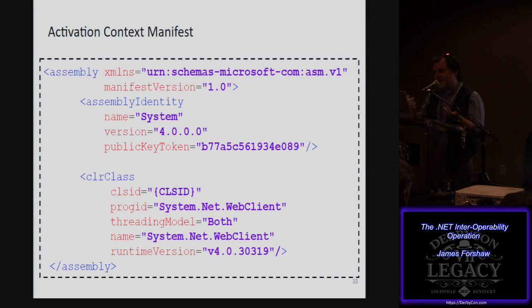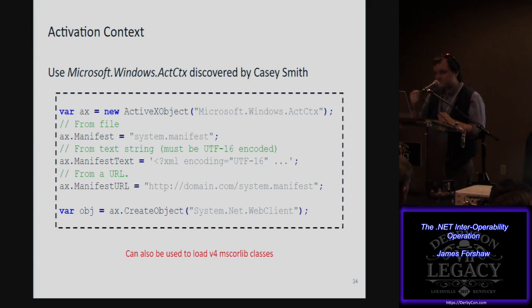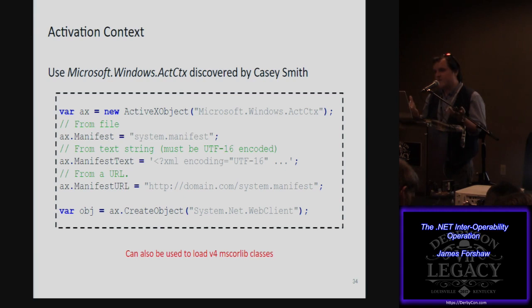To load this, there's a way documented by Katie using an activation context class — an almost hidden COM class — where you specify an explicit manifest file, just a file on disk. You can also specify it as a text string, though you need to ensure correct UTF-8 encoding, or even load it from a URL. The manifest file gets dropped to disk, so it's not completely fileless, but at least you don't have to drop a binary. Then on the activation context object, call create object with the prog ID and it creates the .NET object.